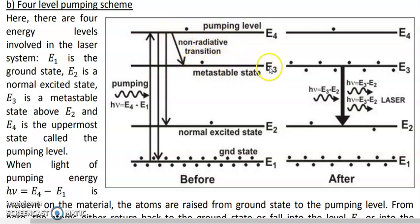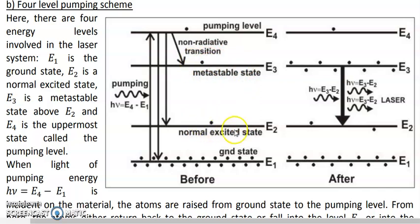Since E3 is metastable, atoms accumulate there because they can stay for a long time. Similar accumulation does not happen in E2 because it is a normal excited state, not metastable. So atoms that fall into E3 remain there, while atoms that fall into E2 do not. Within a very short duration, more atoms accumulate in E3 than in E2, achieving population inversion between E3 and E2.